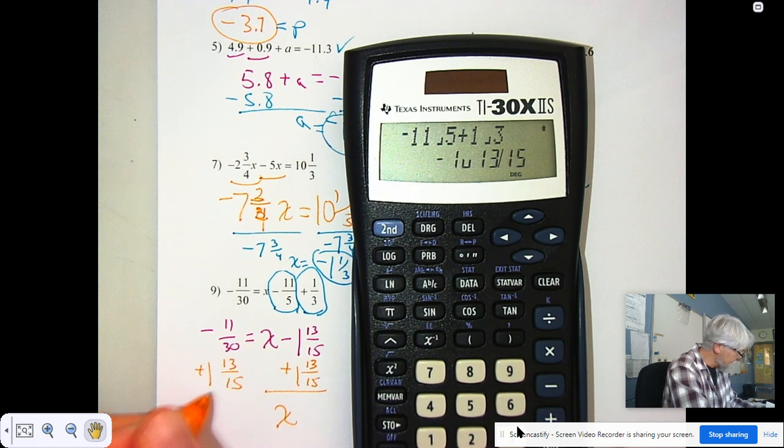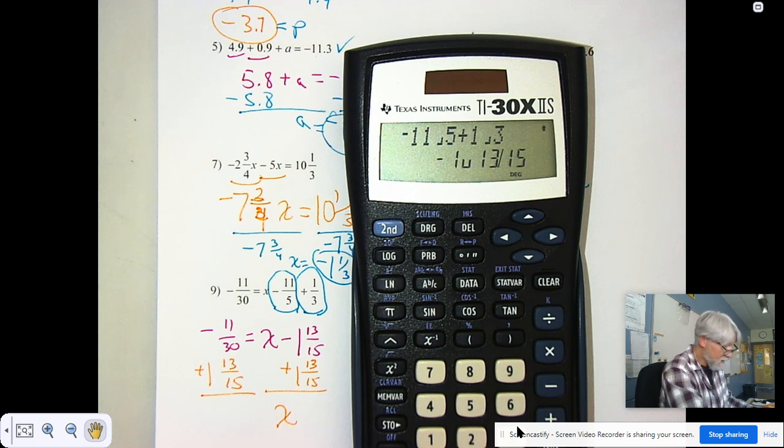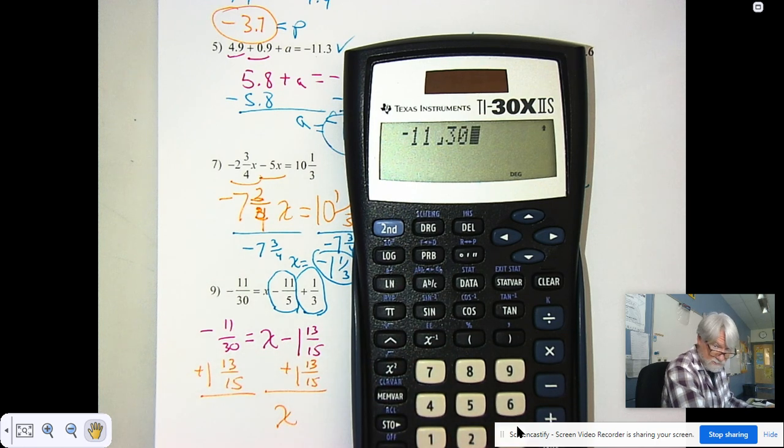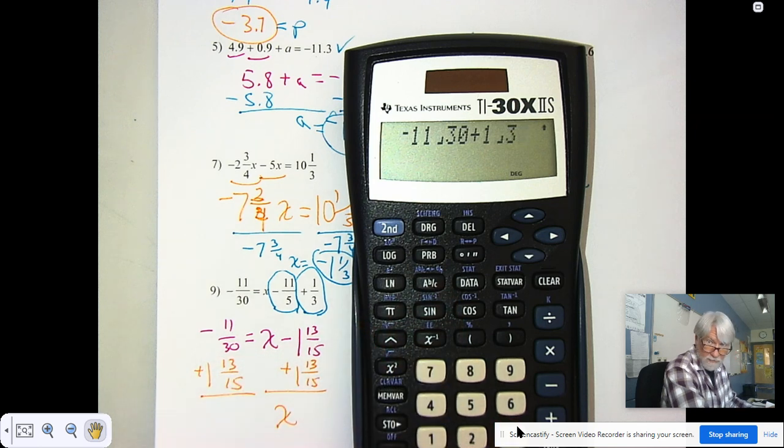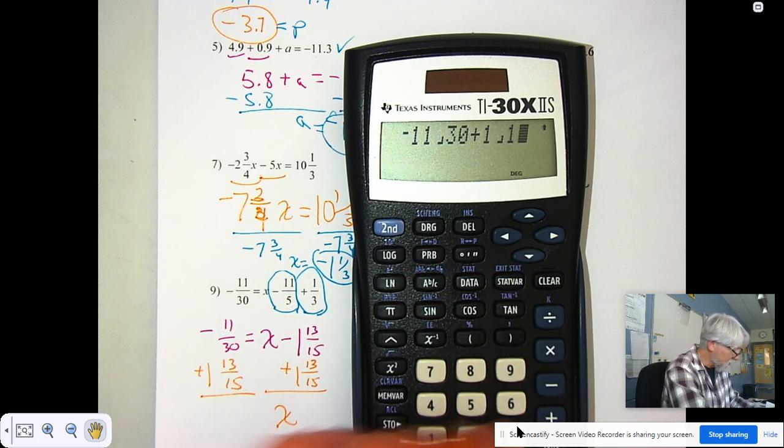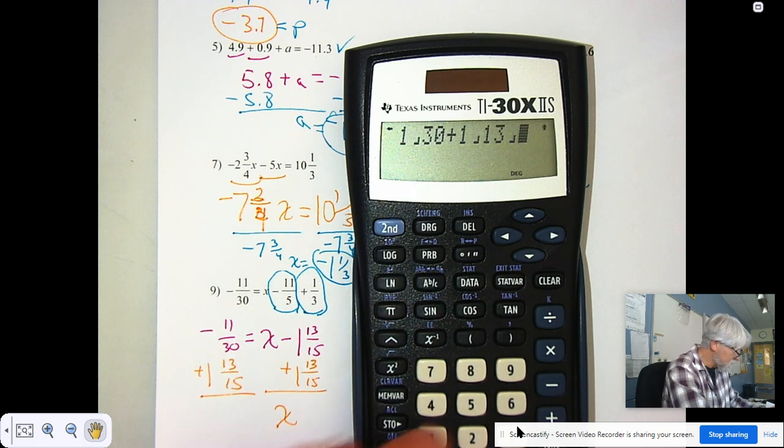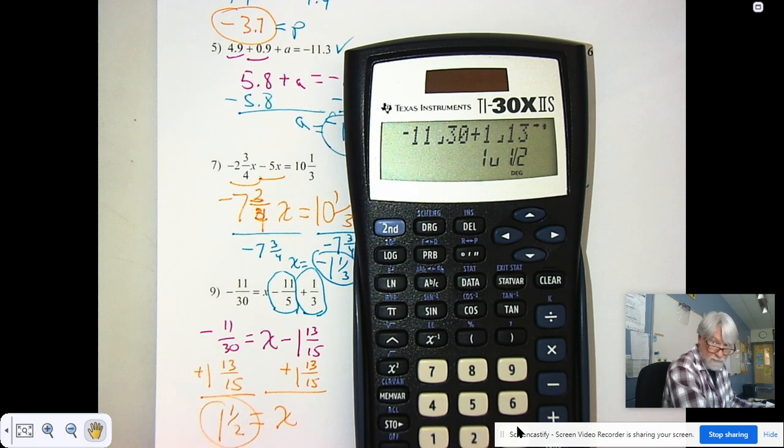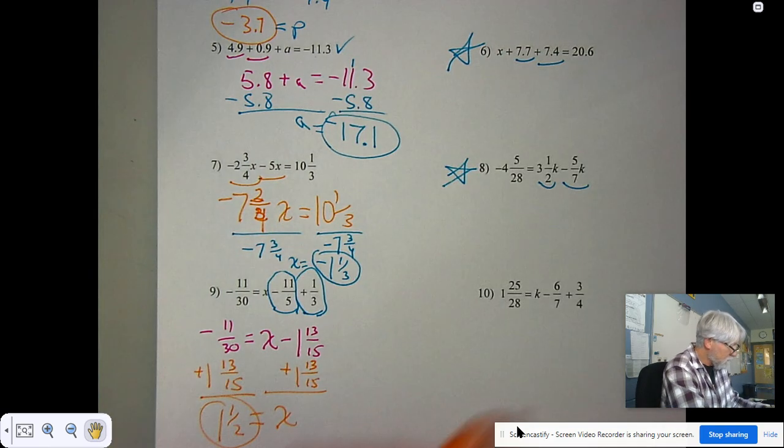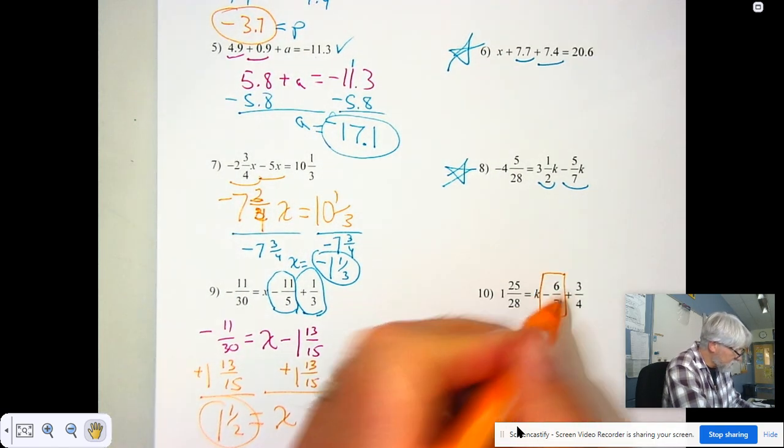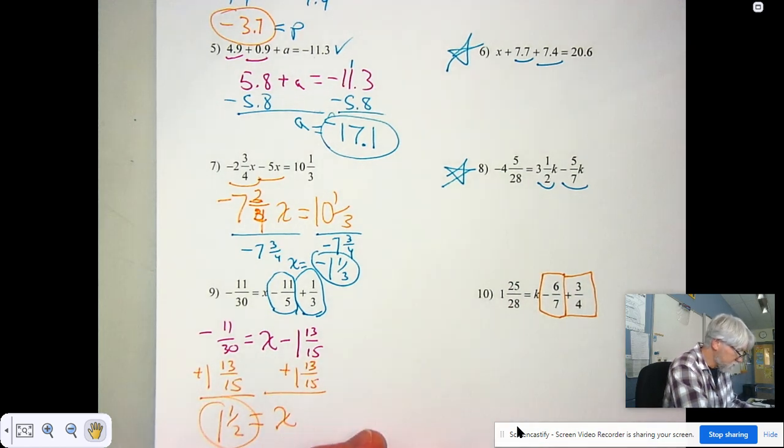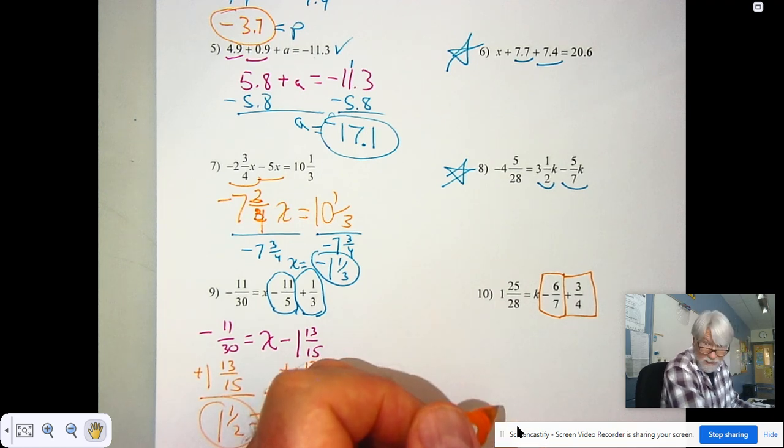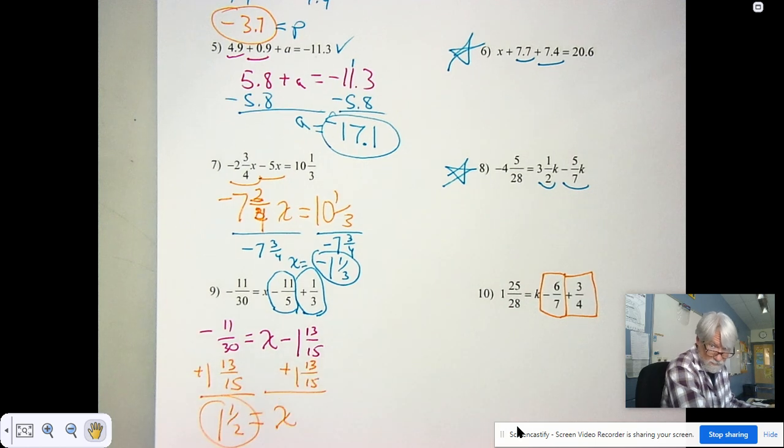I got to keep it equal. Maintain the equality by adding the same thing to both sides. And I've got my negative 11 thirtieths plus 1 and 13 fifteenths. And that equals 1 and 1 half. So again, minus 6 sevenths added to plus 3 fourths. What you get will be negative. So you'll have to add that to both sides to find the value of k. Good luck.